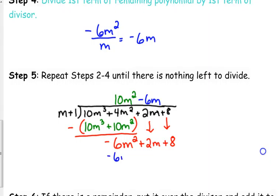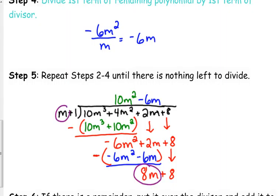Negative 6m times m is negative 6m squared. Negative 6m times 1 is negative 6m. Subtract or change the signs and add. Negative 6 minus a negative 6 is 0. 2 minus a negative 6, subtracting a negative is the same as adding a positive, so that gives us 8m. Bring down the plus 8. Then, we divide the 8m by m. That gives us 8. When we multiply, we get 8m plus 8. And so, when we subtract that, we get 0. We have a remainder of 0.